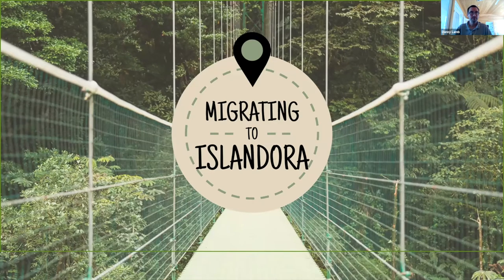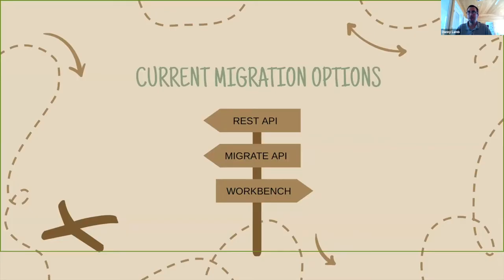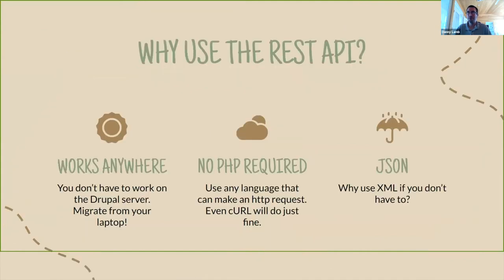So your current migration options, as it stands right now, there are really kind of three paths that I'll talk about. You can use the REST API, you can use the Migrate API, or you could use Islandora Workbench. I'll just go through those three things in turn. I acknowledge that some of this stuff has probably already been mentioned, so I might skip through some slides pretty quickly.